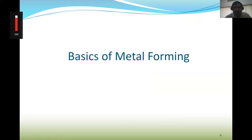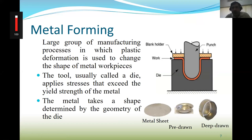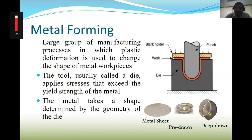Now for the basics of metal forming. Initially there is a die, a punch, a blank holder — you hold your material and deform it. The tool, usually called a die, applies stress that exceeds the yield strength to the metal, and the metal takes the shape determined by the geometry of the die. So our whole domain is in the plastic region, where stresses exceed the yield stress.